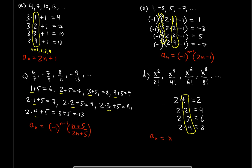The nth term formula is x to the power of 2n, and the denominator is (2n) factorial — make sure the 2 is inside the parentheses with n before applying the factorial, otherwise it will be wrong. There are no alternating signs here, making it a bit easier than the previous examples. Hopefully this was useful — thanks for watching and I'll see you in the next video.